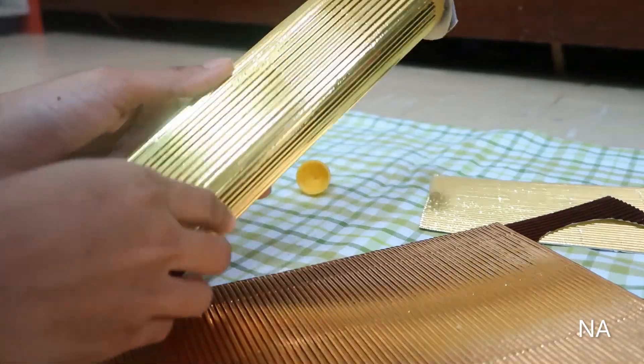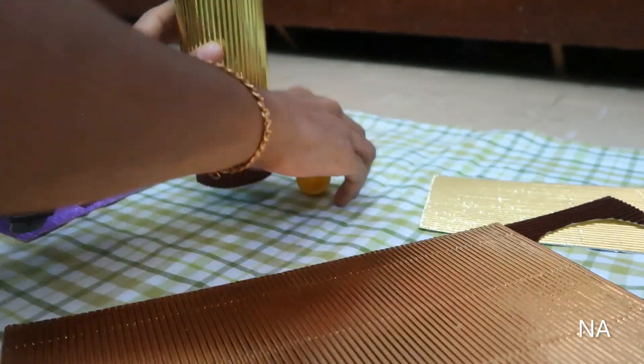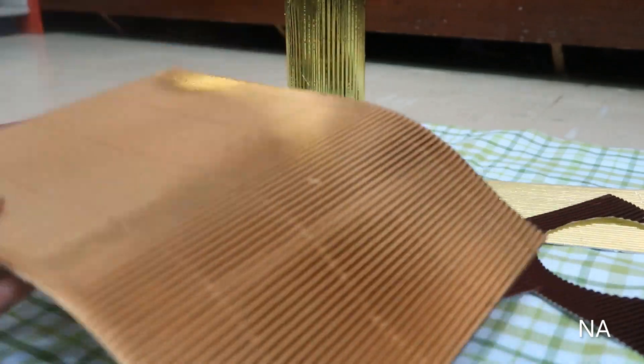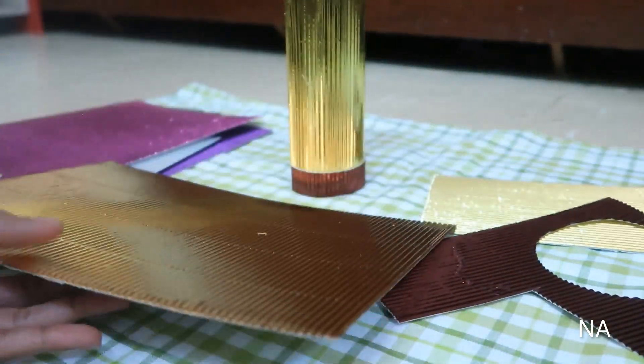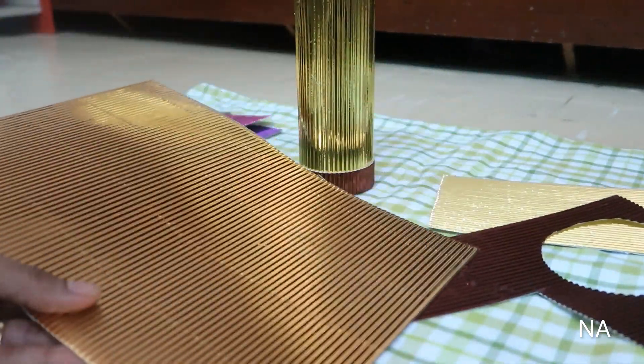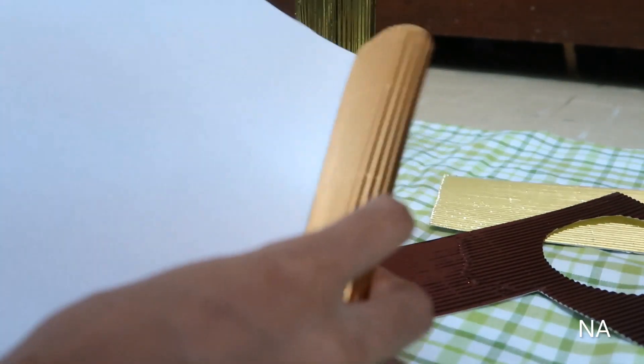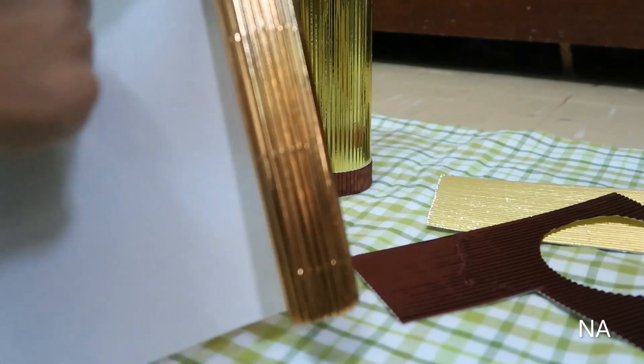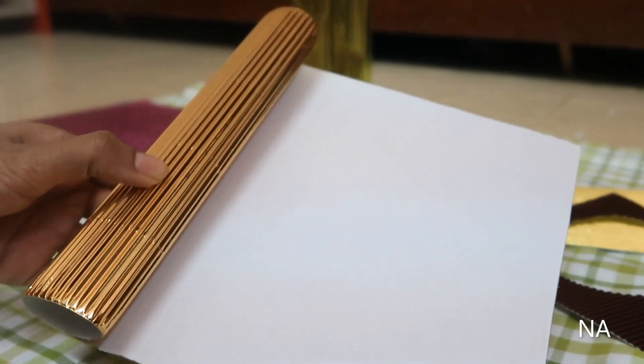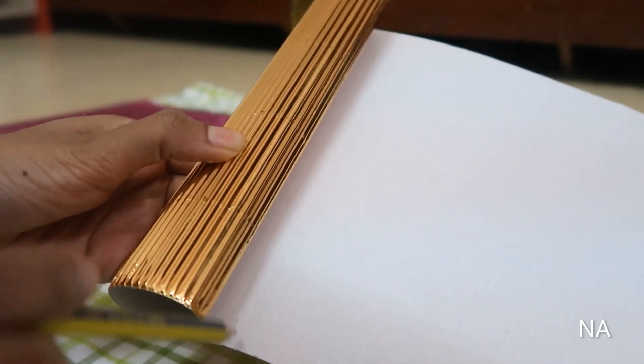So here's our external tank, it's ready. Keep it aside. Next we'll be making the two thin rockets to fix onto both sides of the big tank. I have taken a glazing sheet of different color, we'll just roll it as shown to get the small rockets. Just cut out the excess.